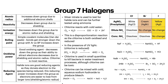Silver nitrate is used to test for halide ions and can be further tested using ammonia. When added to silver nitrate: chlorine forms a white precipitate, bromine forms cream, and iodine forms yellow. Sometimes the precipitates aren't easy to distinguish from each other in real life, so you'd then want to test with ammonia — either dilute or concentrated. Chlorine, because it's the most reactive, will dissolve with dilute ammonia. Bromine requires concentrated ammonia to dissolve. And if the precipitate doesn't dissolve in either, then you've got iodine.